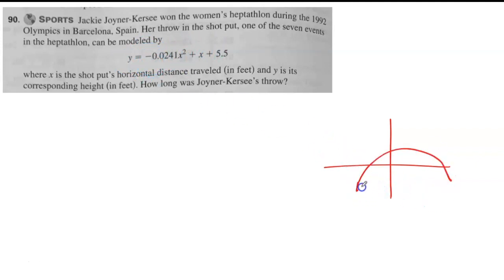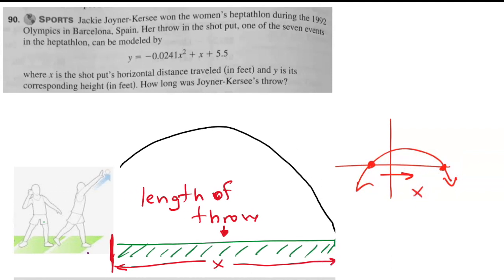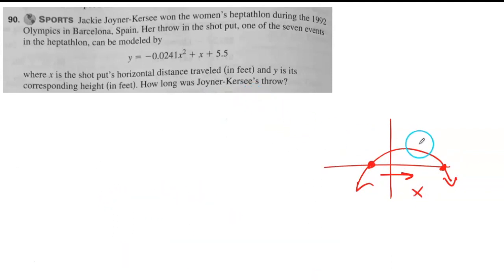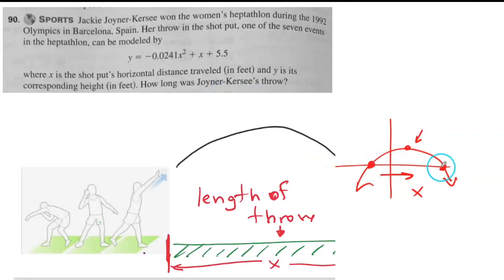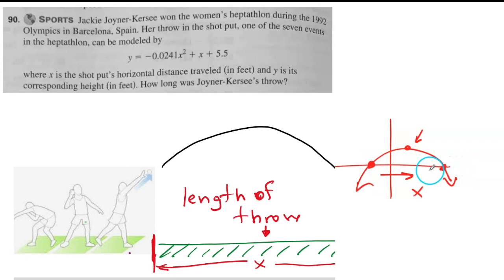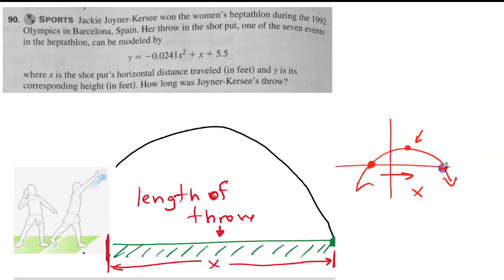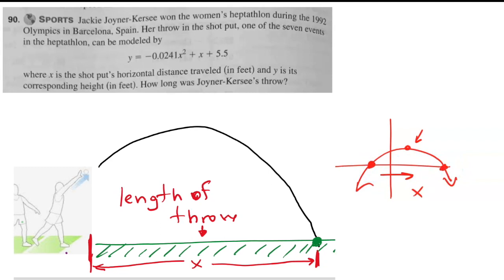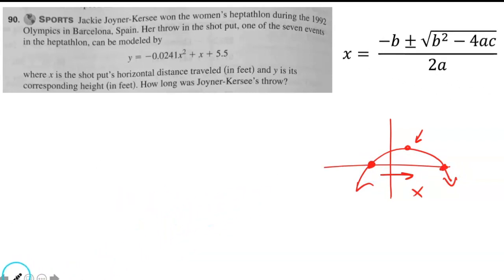Therefore, we're going to have something like that, it's facing down. And then we want to know how long is the horizontal distance. If they ask me how high was the maximum height, then I'll be talking about the vertex. Right now is how long, how far did she throw the shot put. So to do that, I'm going to find the x-intercepts. To find the x-intercepts, I'm going to use the quadratic formula. That's our goal for today.